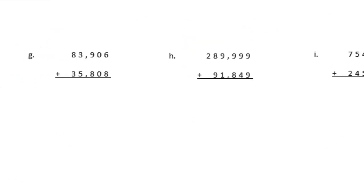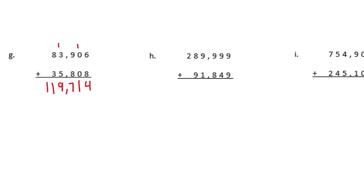Problem G: 83,906 plus 35,808. 6 plus 8 is 14 — carry the 1; 1 plus 0 plus 0 is 1; 9 plus 8 is 17 — carry the 1; 1 plus 3 plus 5 is 9; and 8 plus 3 is 11. We get 119,714.